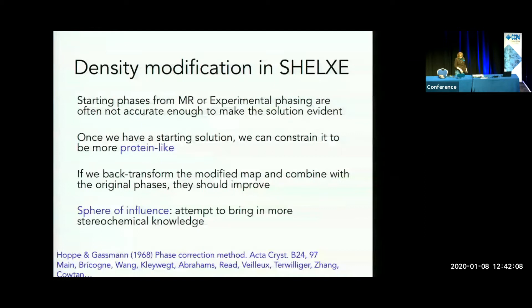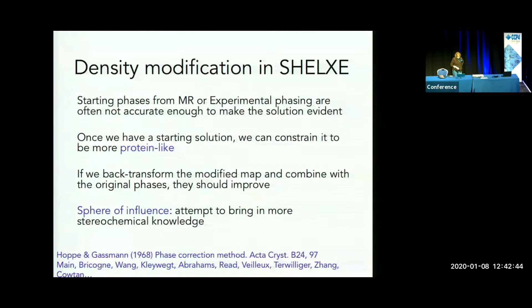There are papers as old as the 1960s from Peter Main on density modification, and the Hoppe and Gassman contribution is credited as being the first time it was successfully used for small molecules to enhance a partial solution at high resolution. It's a field with lots of contributions, like those from Gerard Ricoin in '76, VC1 solvent flattening in '85, and a lot in the '90s with Jean-Peter Abraham's solvent flipping. The first density modification program I used was Frederick Villeuse and Randy Ritz, Angela and Damon in those days.